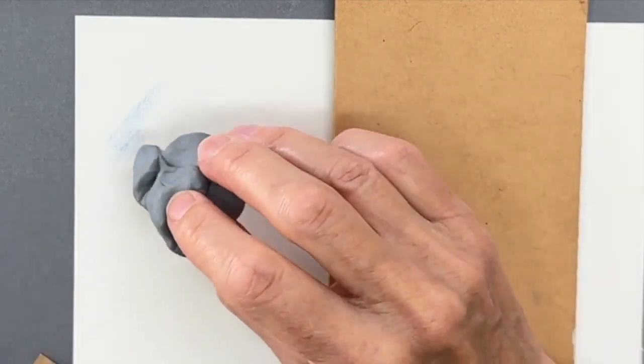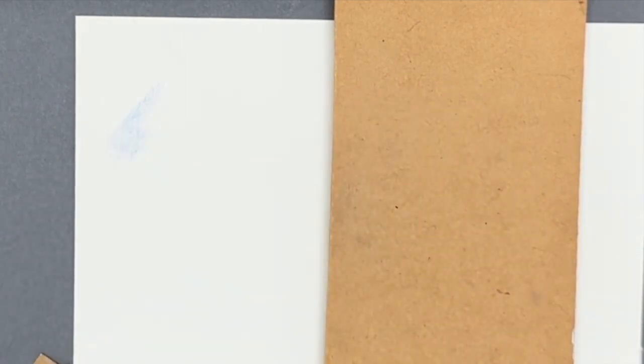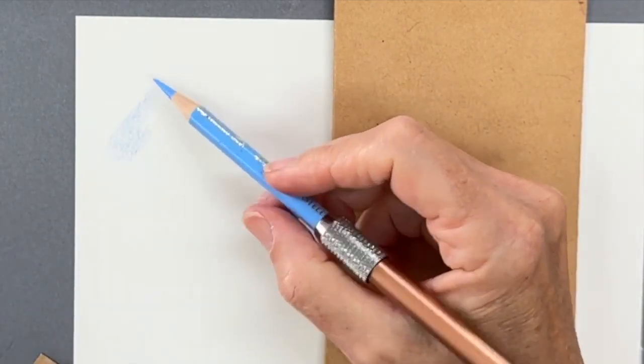Use your kneadable eraser, make a little bit of a sharper edge, and just gently dab that out. When you work lightly, it's so easy to fix.